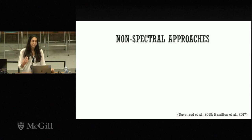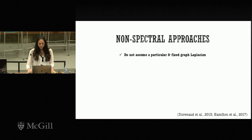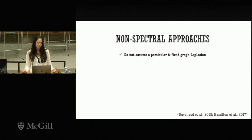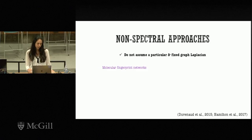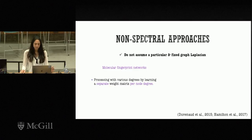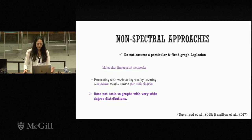There have also been attempts to tackle graph convolutions in the spatial domain — operating directly on the graph. These approaches are interesting because they do not assume any particular graph Laplacian up front. However, the challenge remains: how do we handle the fact that each node may have a different number of neighbors? For example, molecular fingerprint networks address different node degrees by building a weight matrix for each degree, which works for small degree ranges like two to five but does not scale to wider degree distributions.